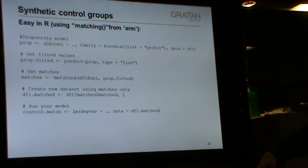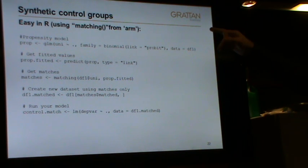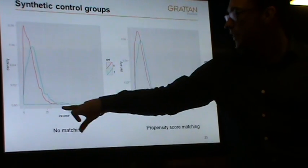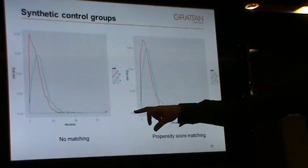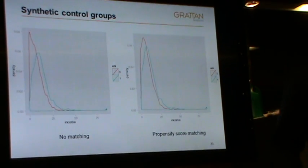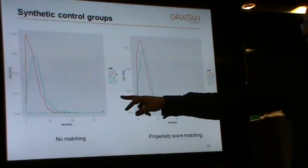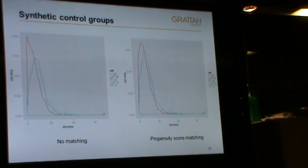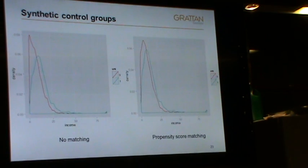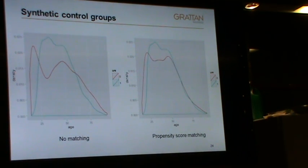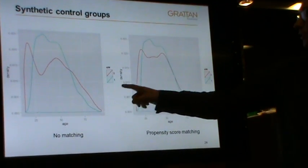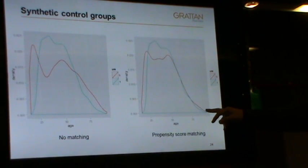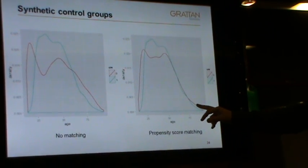For each treated observation we find someone who is just as likely to go to university, using variables like whether their mum went to university, their age, gender, state, and whether they live in a rural or urban centre. For each person who did go to university we find someone who didn't but is about as likely to have gone — and we throw out the rest, then do regression on the remaining group. In the ARM package there's a matching function. After propensity score matching the distributions are much more balanced — we've knocked off the peak difference — and with age there's quite a noticeable improvement.